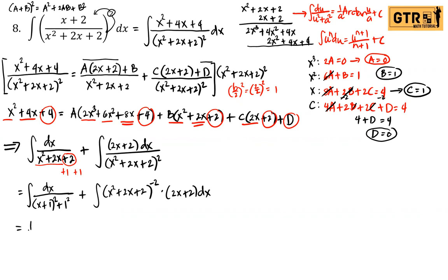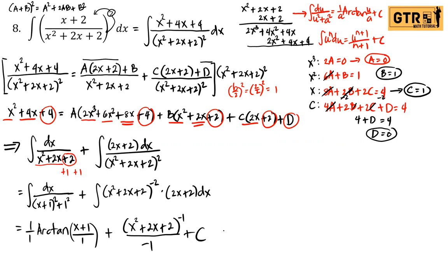Applying the formulas: 1/a with a = 1, so (1/1) arctan((x+1)/1), plus applying the power rule: (x² + 2x + 2)^(−2+1) / (−2+1) = (x² + 2x + 2)^(−1)/(−1). Simplifying: arctan(x+1) minus 1/(x² + 2x + 2) + C.